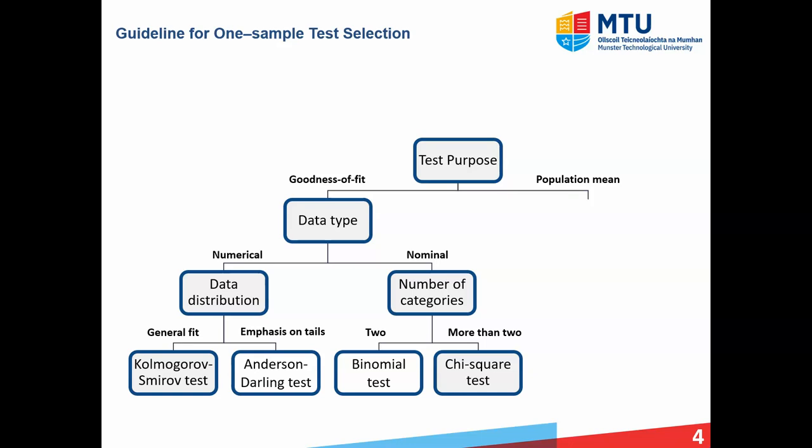For example, a researcher performing a survey to assess preferences for different flavors of ice cream — say chocolate, vanilla, and strawberry — among participants from different regions such as north, south, east, and west, could use a chi-square test to examine if there's a significant difference in flavor preferences among those various regions.